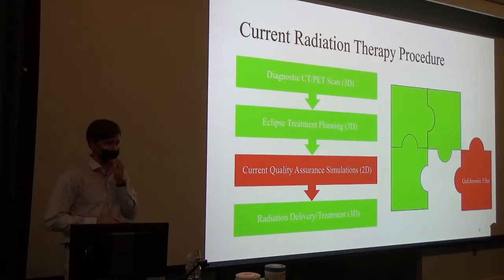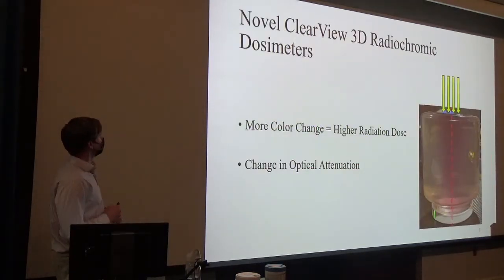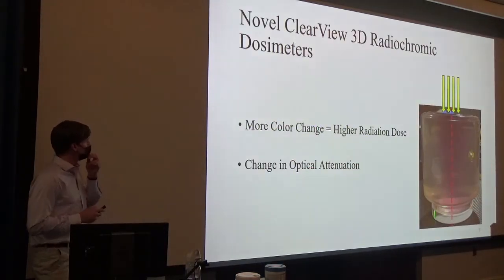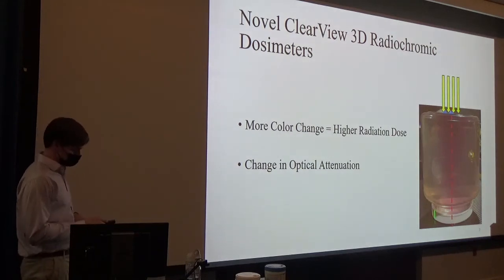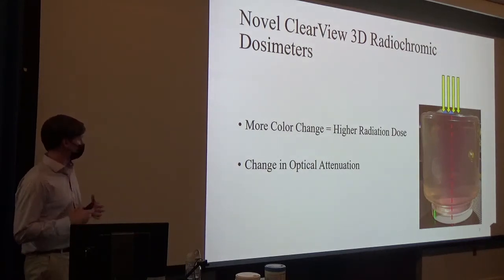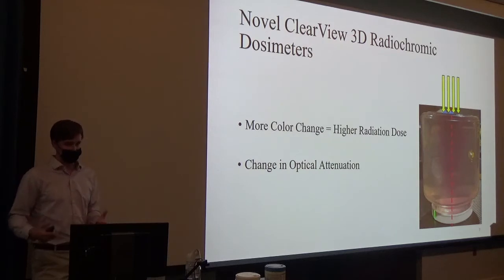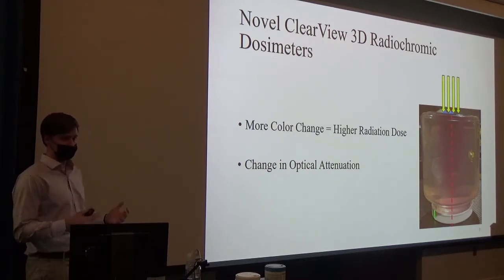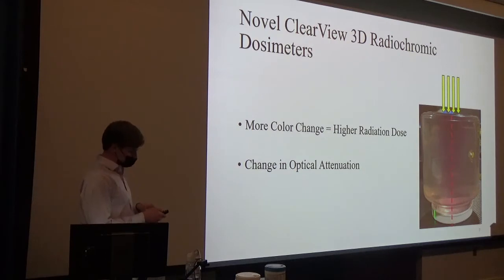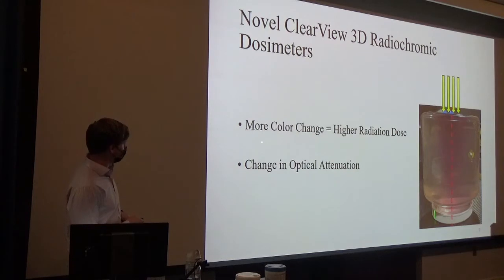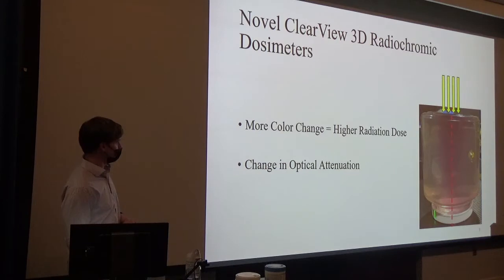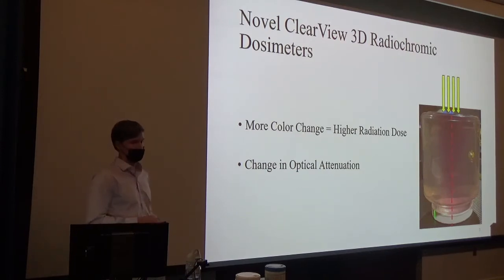That's where my project looked to find a solution. Our solution came in the Clearview 3D radiochromic dosimeter — pictured to the right. These work the same way as 2D radiochromic and gafchromic films, except installed into a gel that forms a volume. The radiation beam is sent down the central axis, and the more color change observed — which we call the change in optical attenuation — is associated with a higher radiation dose. The top is darker than the bottom, and the sides are almost clear, meaning little or no radiation reached those regions.